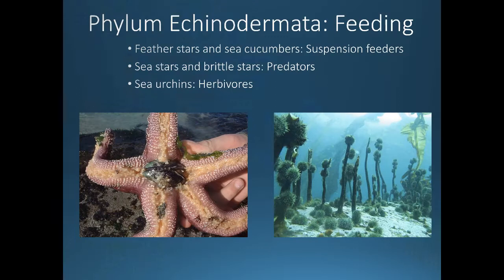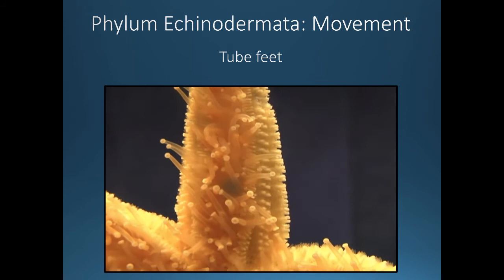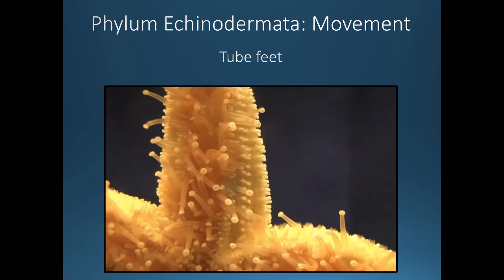There's also a video on how sea cucumbers feed: they burrow into the ground, shoot out tentacles for suspension feeding, and have a remarkable defense — if a predator approaches, they literally spit out their guts, which contain sticky substances and toxins that kill attackers. The video is available on the PowerPoint in Blackboard. Echinoderms move using tubular feet, which help organisms move along surfaces and also detect things, as we saw when the sea star detected the opening of a clam.